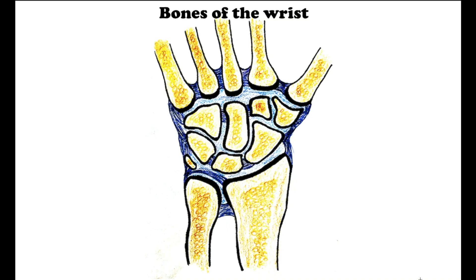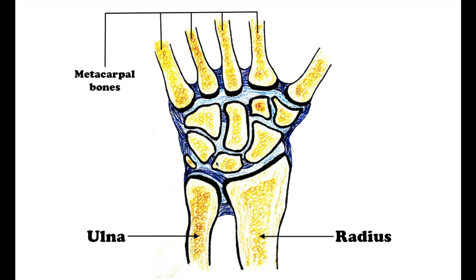Hi everyone, it's Schematic Mad and today we are going to talk about carpal bones. The eight short carpal bones of the wrist are organized into two rows: a proximal row which articulates with the bones of the forearm, the ulna medially and the radius on the lateral side, and a distal row which articulates with the basis of the 5 metacarpal bones of the hand. The carpal bones allow the wrist to move and rotate vertically.